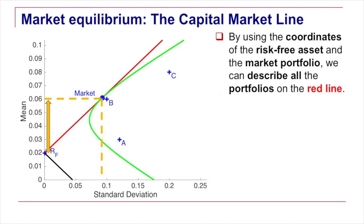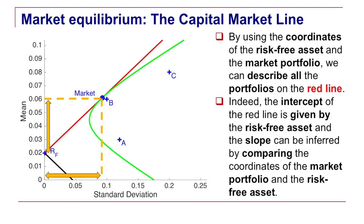And if we look now at how much you move to the right when moving along the red line, the horizontal movement for the market coordinate is ten percent to the right minus the level of the origin which is zero percent for the risk free rate. So the slope is six percent minus two percent divided by ten percent. This is the slope of the red line.